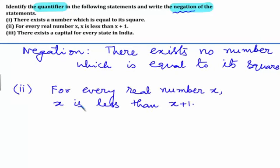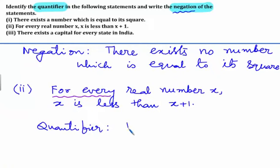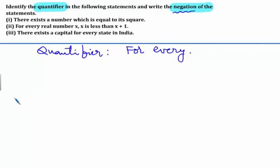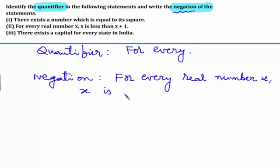The second statement is: for every real number x, x is less than x + 1. In this statement, the quantifier is 'for every real number x.' The negation of this statement is: for every real number x, x is not less than x + 1. By writing 'not,' we are writing the negation.